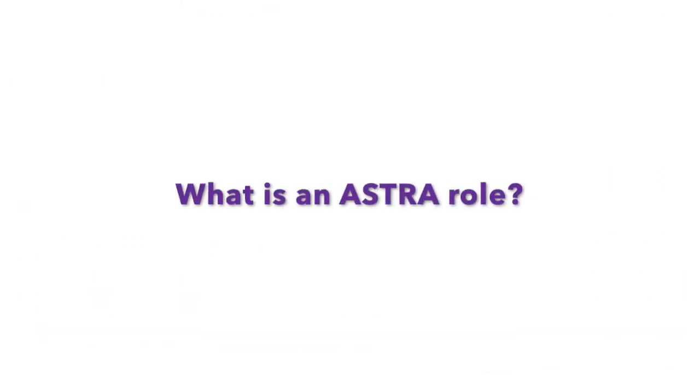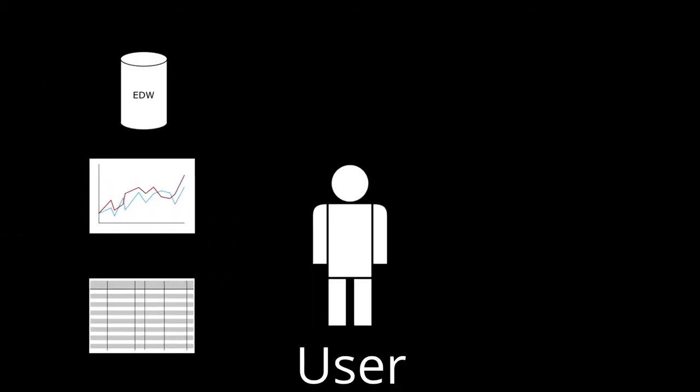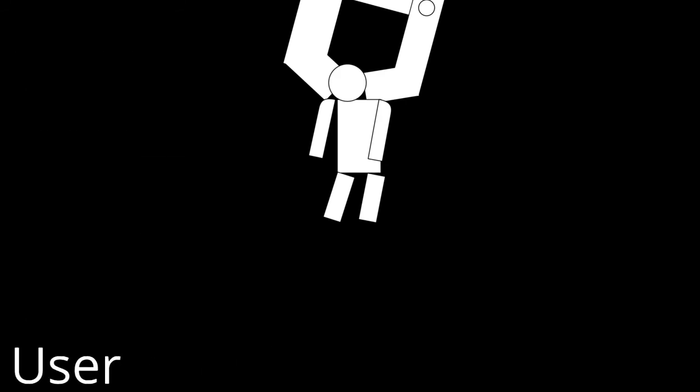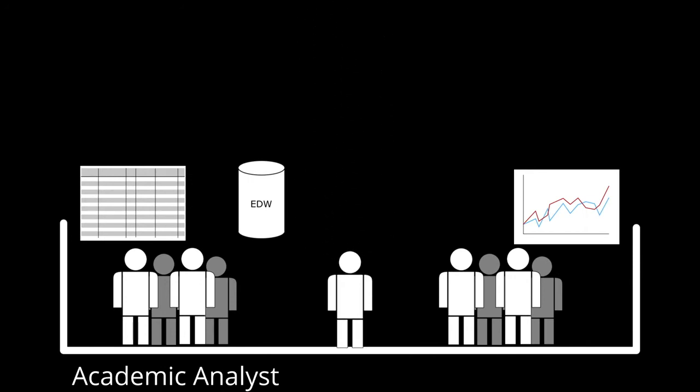What is an Astra role? Astra is an authorization system that stores user access information for a variety of administrative applications and tools across the university. Rather than assign a user access on an individual basis, Astra allows us to manage access by group membership. Each user must apply for the role that best fits their needs, and once granted, that user gets access to everything the role has access to view. If their needs change, they can be moved into a different role.